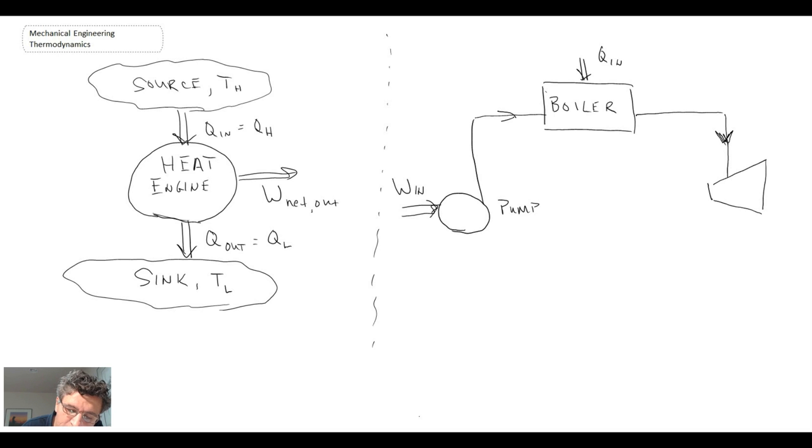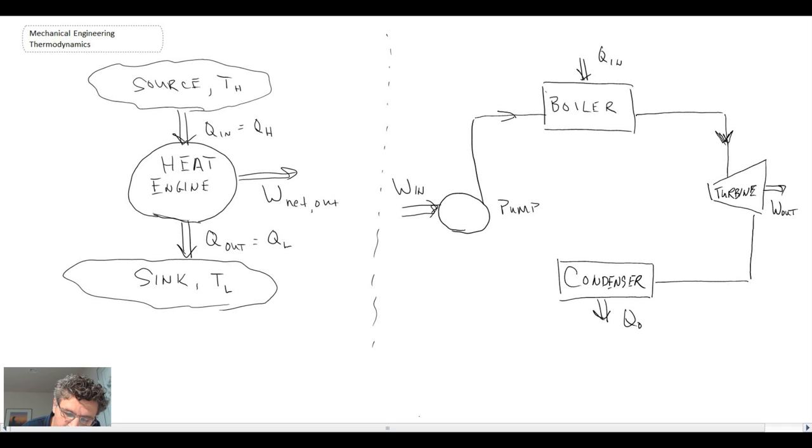The working fluid leaves the boiler and it flows into a turbine. And then that is work out. And then we need to reject, so we reject thermal energy out. And then the working fluid comes back up and into our pump. So that is a heat engine. In this particular case, it's the Rankine cycle that we're looking at. But it is a heat engine. It takes in energy or thermal energy and it rejects it. And in the process, it does work. And it is a cycle.